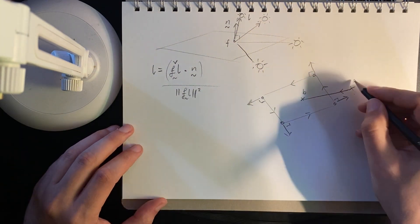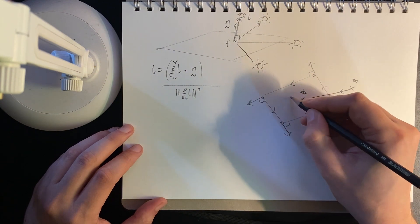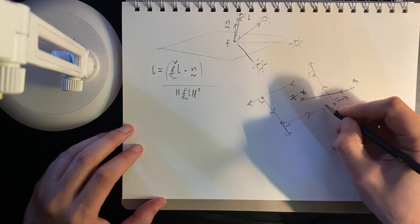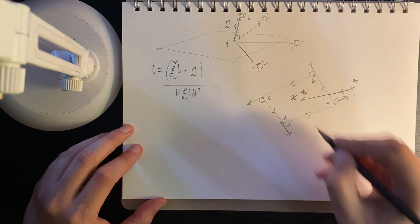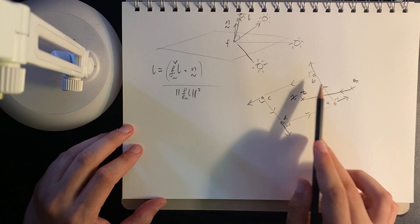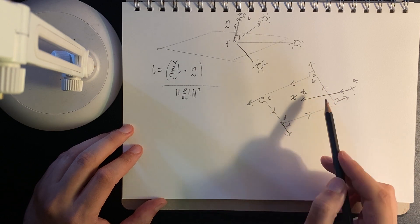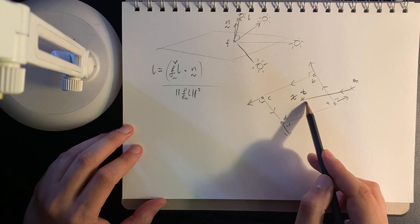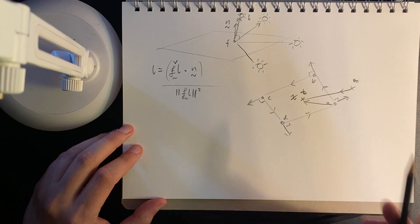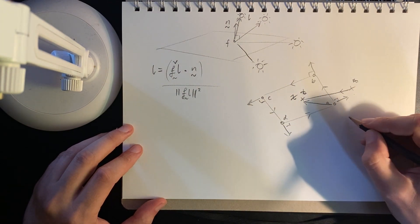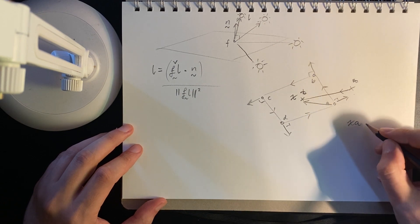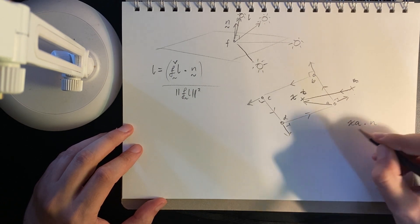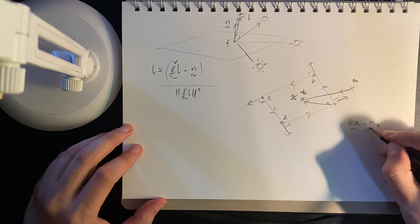So we'll just, I'll call this X, this will be my interior point, and then we'll have A, B, C, D.